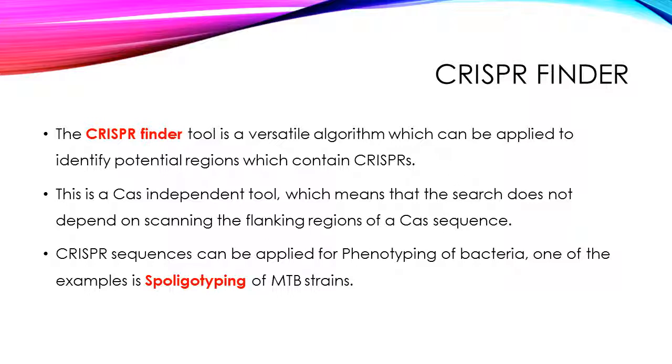CRISPR sequences can be applied for phenotyping of bacteria — for example, the spoligotyping of Mycobacterium tuberculosis strains. It can also be extended for the genotyping of other bacterial species.